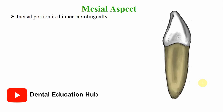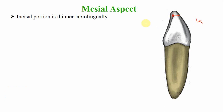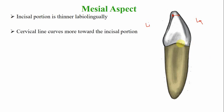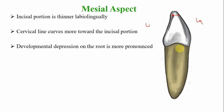From the mesial aspect, the incisal portion of the mandibular canine is thin labiolingually. The cervical line curves towards the incisal aspect, which is common to all incisors. A developmental depression is present and more pronounced on the mesial surface of the root.